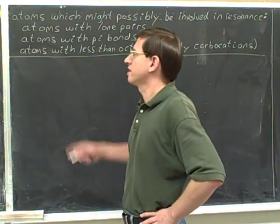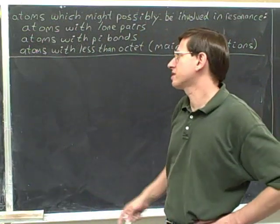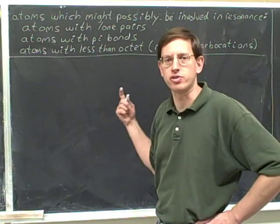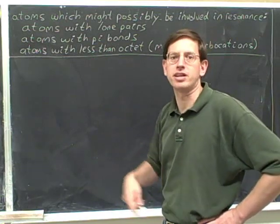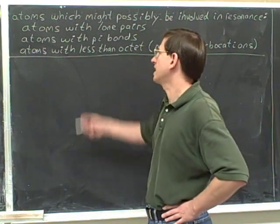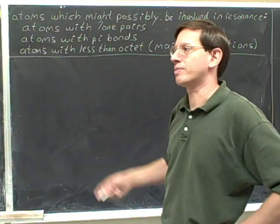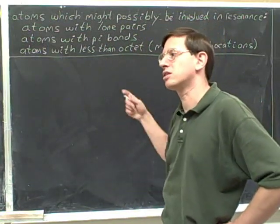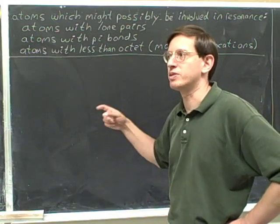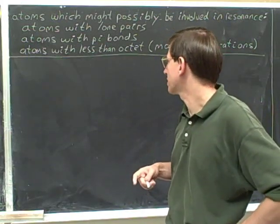This really just gives us the candidates for who might be involved in resonance. Sometimes something is going to fall into this list, but it still turns out that there's no legal resonance structures we can draw, or maybe no significant resonance structures. So that's why I say these are just the atoms that might possibly be involved. Occasionally, something will be in this list, and even though it could potentially do resonance in another molecule, it doesn't actually have the potential for resonance in that specific molecule.